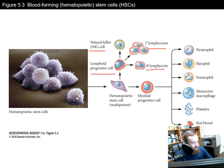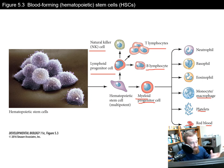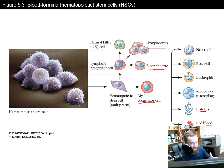Alternatively, HSCs can become myeloid progenitor cells, which are the precursors to many blood cells — so platelets, red blood cells, macrophages, etc. They retain a bit of multipotency where they're able to form multiple different types of cells, and the type of cell they differentiate into is determined by the microenvironment that those HSCs are exposed to.